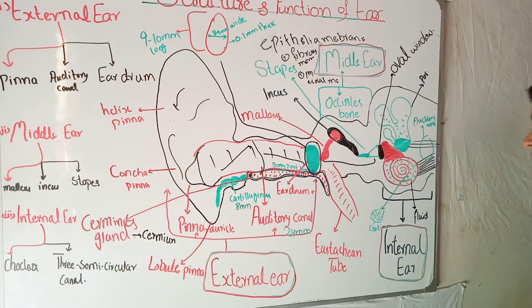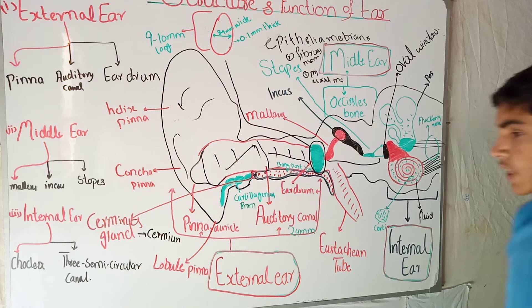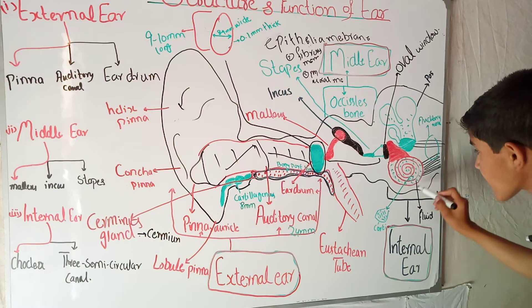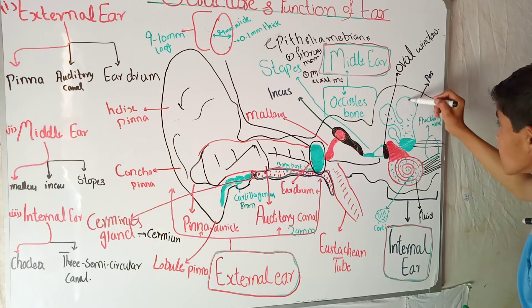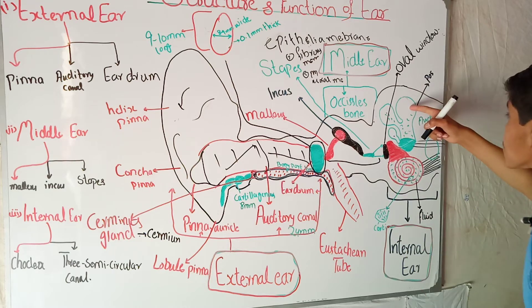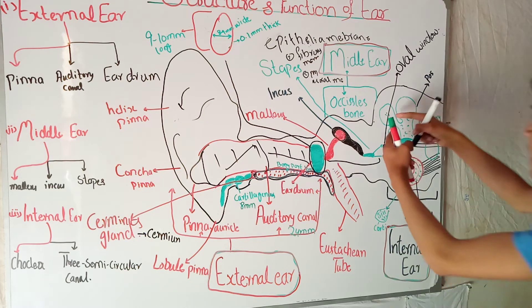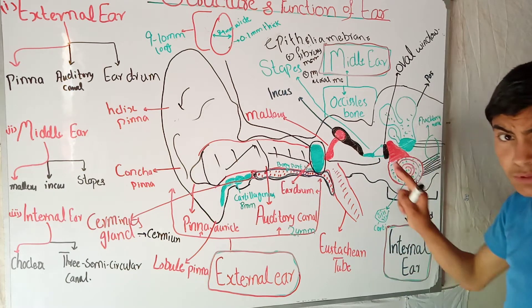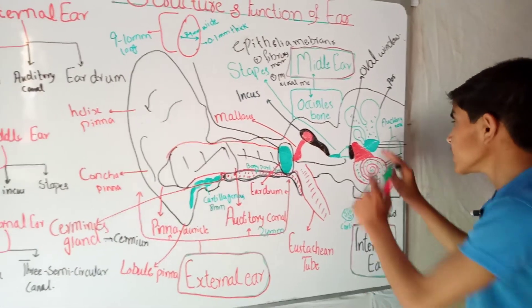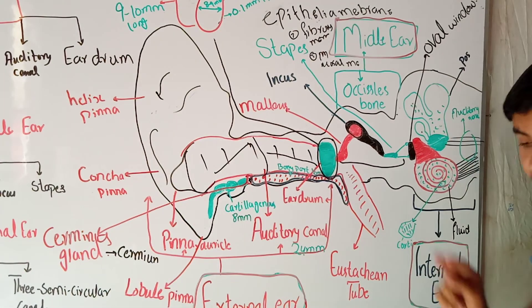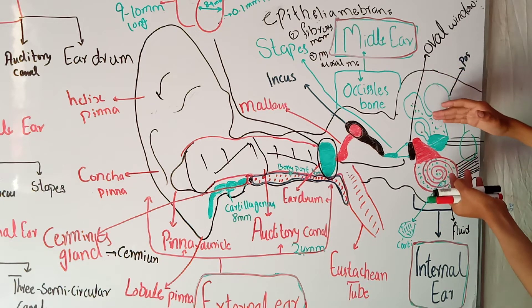The internal ear consists of two portions. One is the cochlea - the coiled circular part. The other is the three semicircular canals: the posterior semicircular canal, the anterior semicircular canal, and the lateral semicircular canal. The two vertical semicircular canals are positioned vertically, and one is horizontal. In a 3D image these orientations become clear.